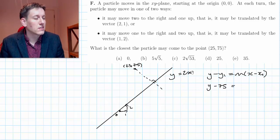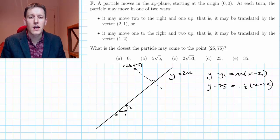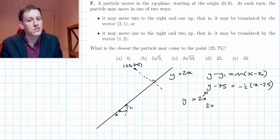I'm gonna look at the dotted line then. So it's y minus 75, the gradient of this dotted line is going to be minus a half because it's perpendicular to a line with gradient two. So minus a half times x minus 25.